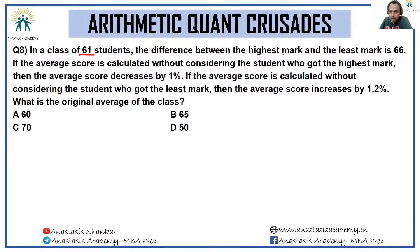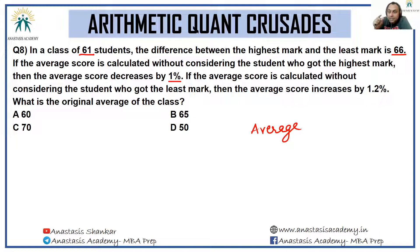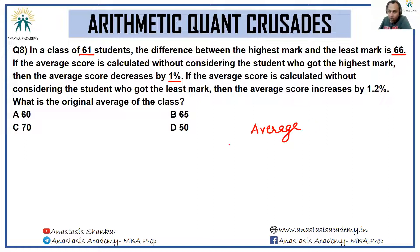In a class of 61 students, the difference between the highest and least mark is 66. If the average is calculated without the student with the highest mark, the average decreases by 1%. Removing the highest person creates a deficit of 1% for each of the remaining 60 students — so the highest student's score was 60% more than the average, i.e., 1.6 times the average.